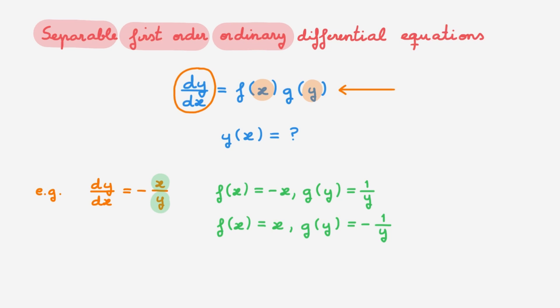This differential equation describes a circle centred at the origin, and you can find the detailed solution in a separate video linked in the description. As a second example, we can write dy/dx equals y. By inspection, it is again clear that this equation is separable. The right-hand side only depends on y and there is no explicit function of x. In this case, f is equal to 1 because there is no explicit x dependence, while g equals y. This equation describes exponential growth, and we will solve it in a moment.